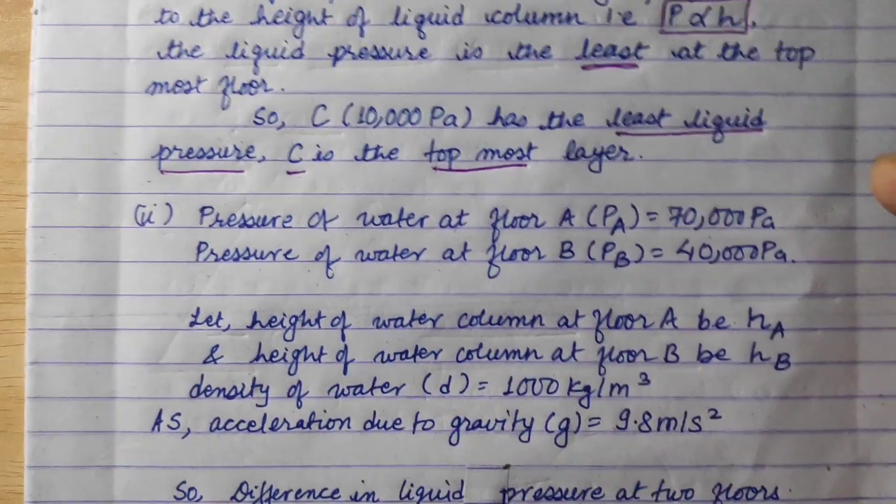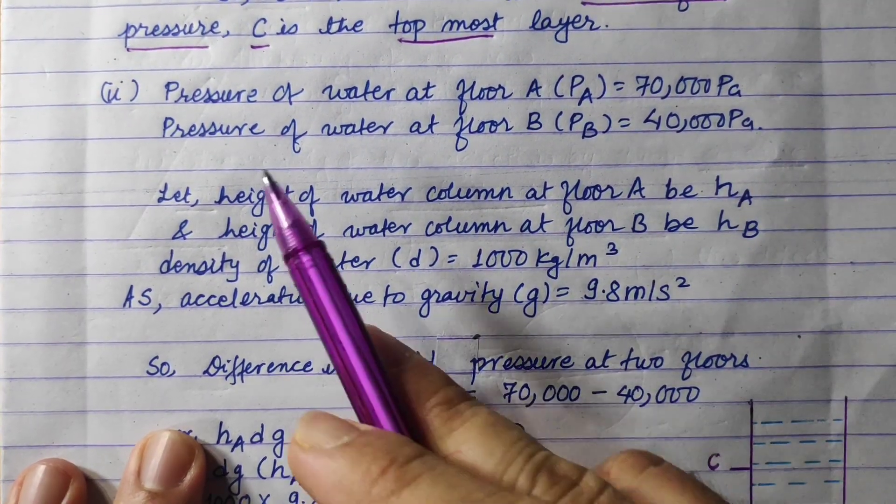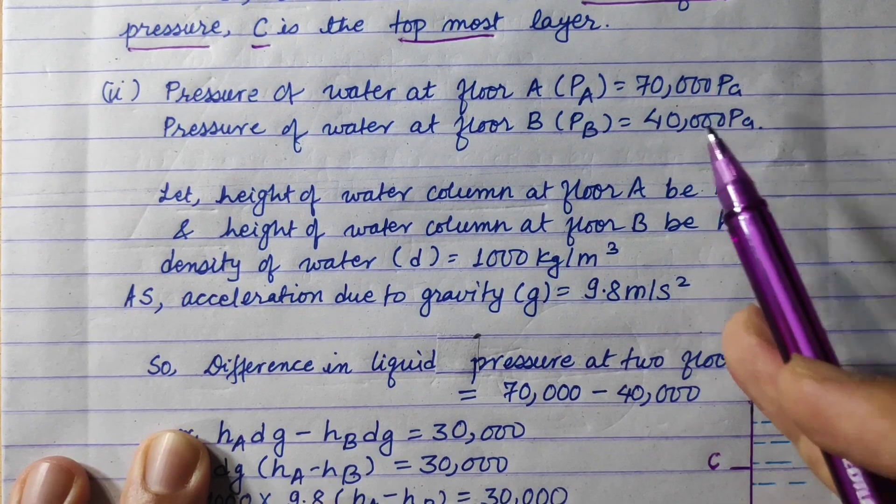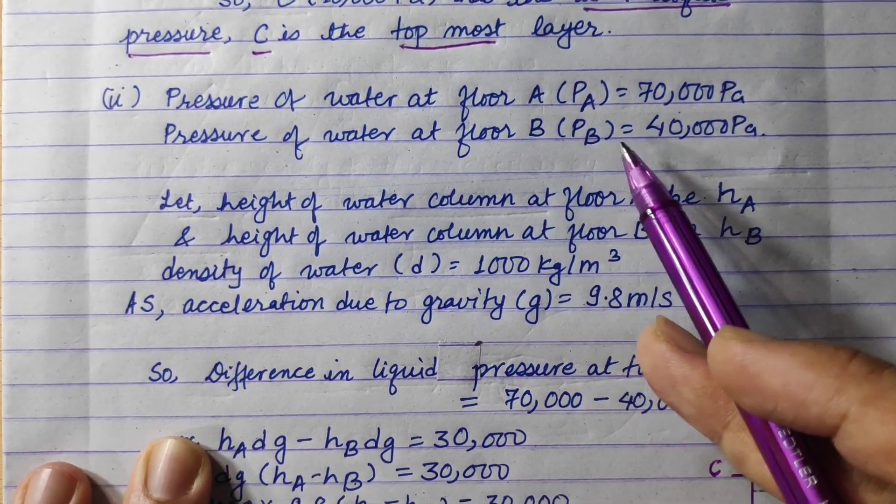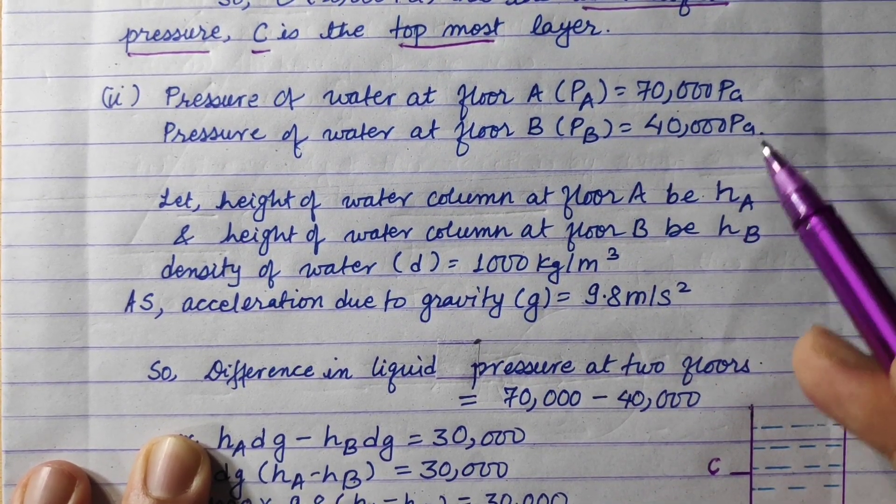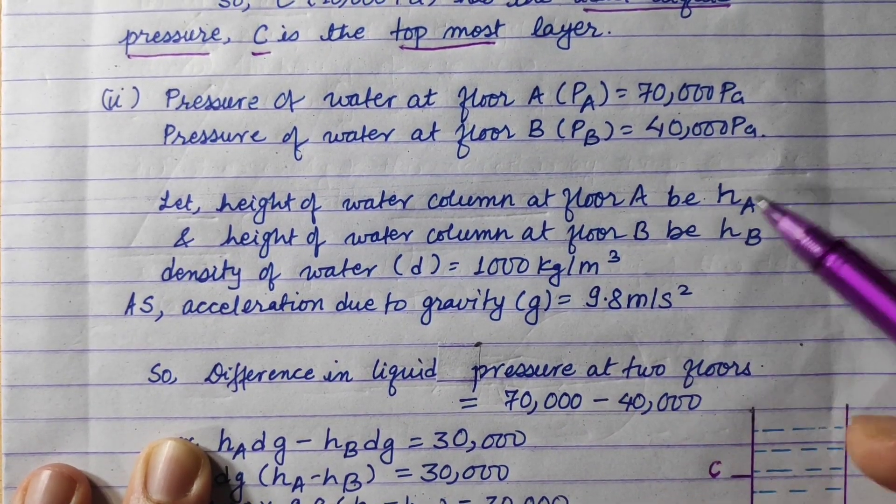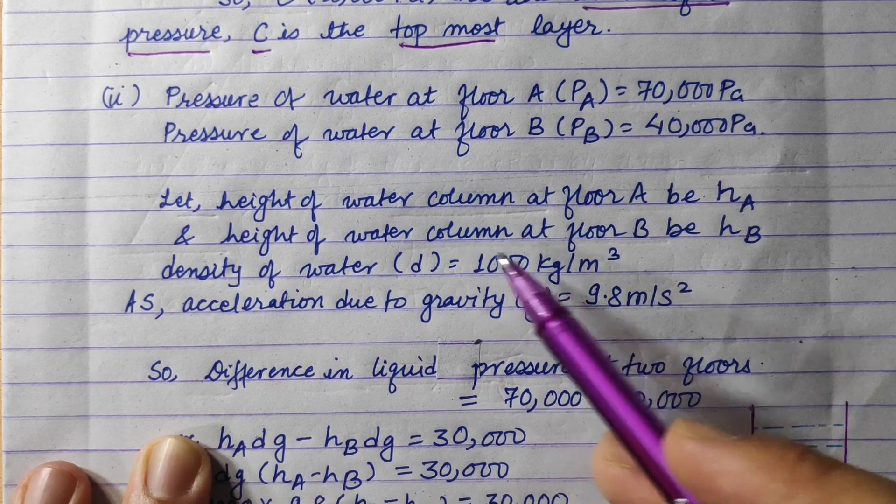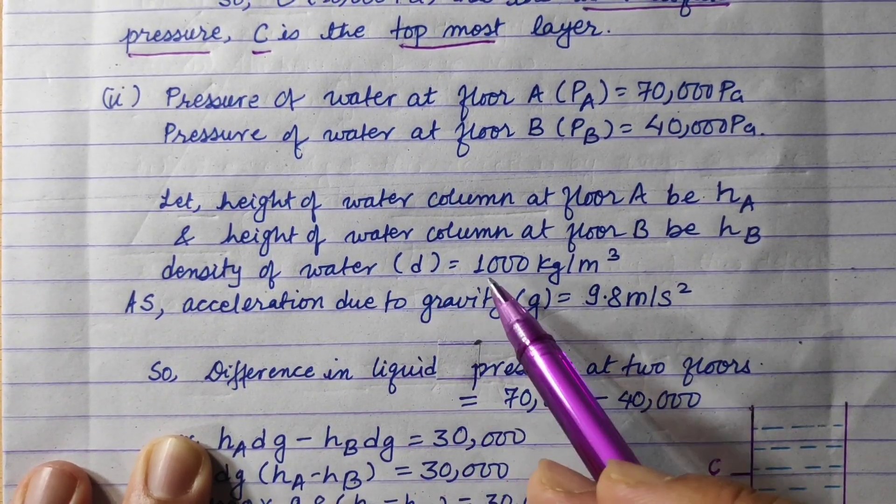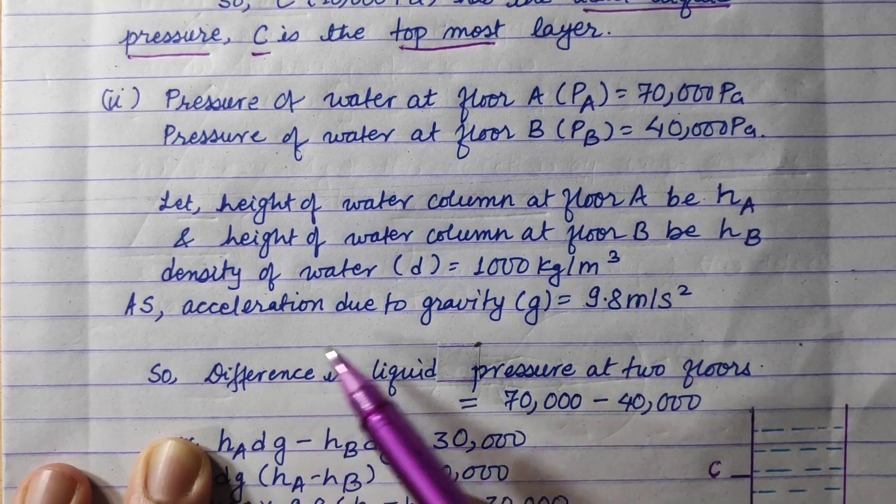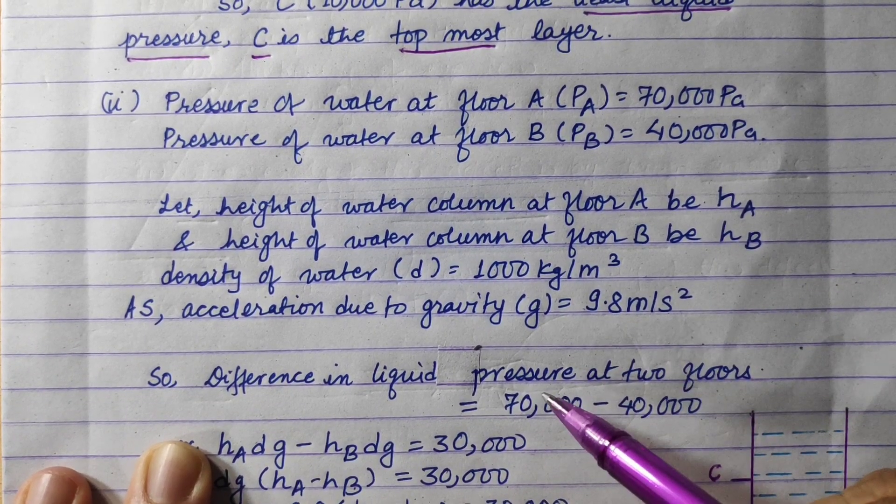Suppose, what are we given? Pressure of water at floor A, let's call it PA, is 70,000 Pascal. Pressure of water at floor B, let's call it PB, is 40,000 Pascal. Let height of water column at floor A be hA, and height of water column at floor B be hB. Density of water d is 1000 kg per meter cube, and acceleration due to gravity g is 9.8 meter per second square.